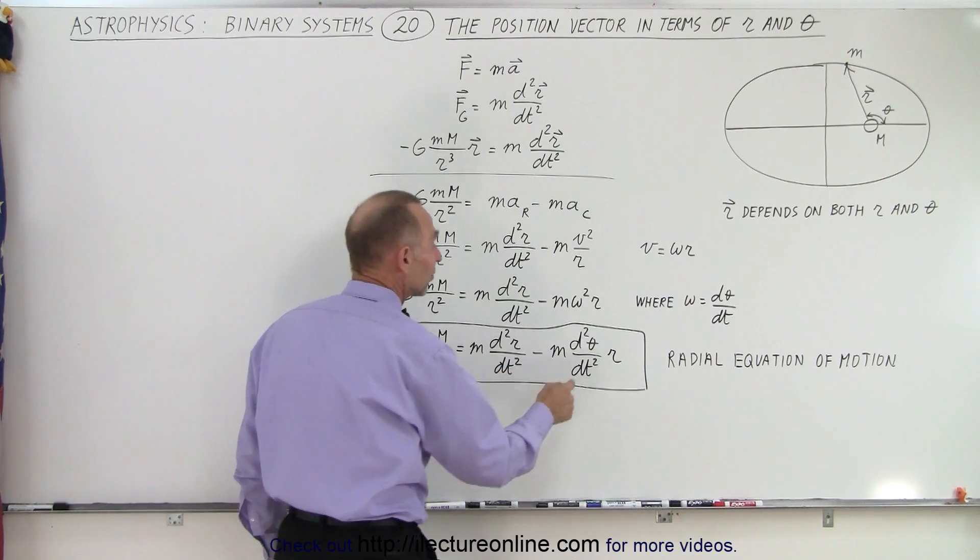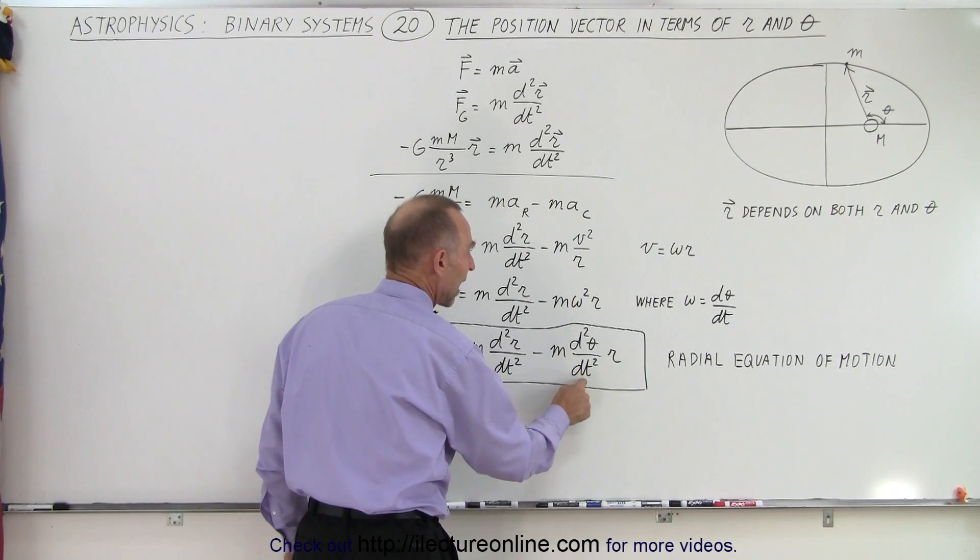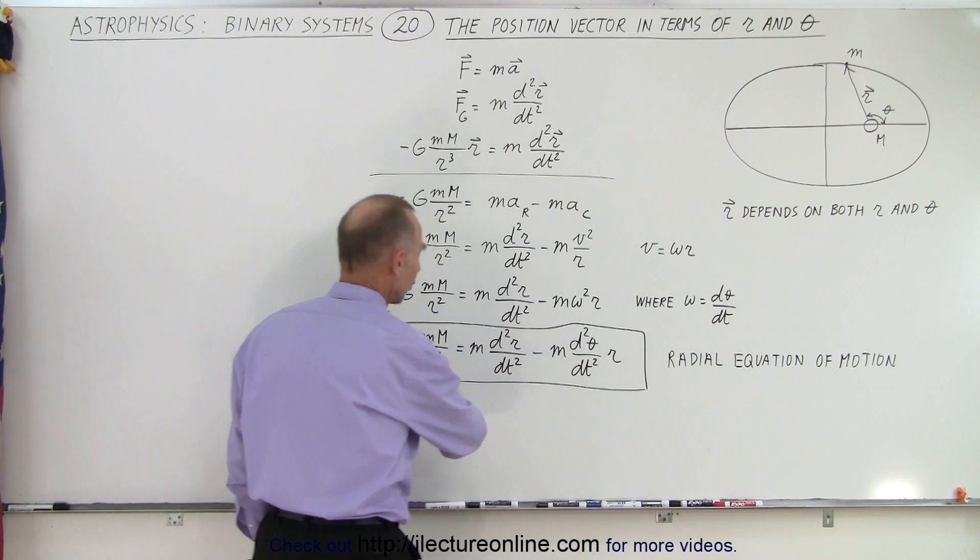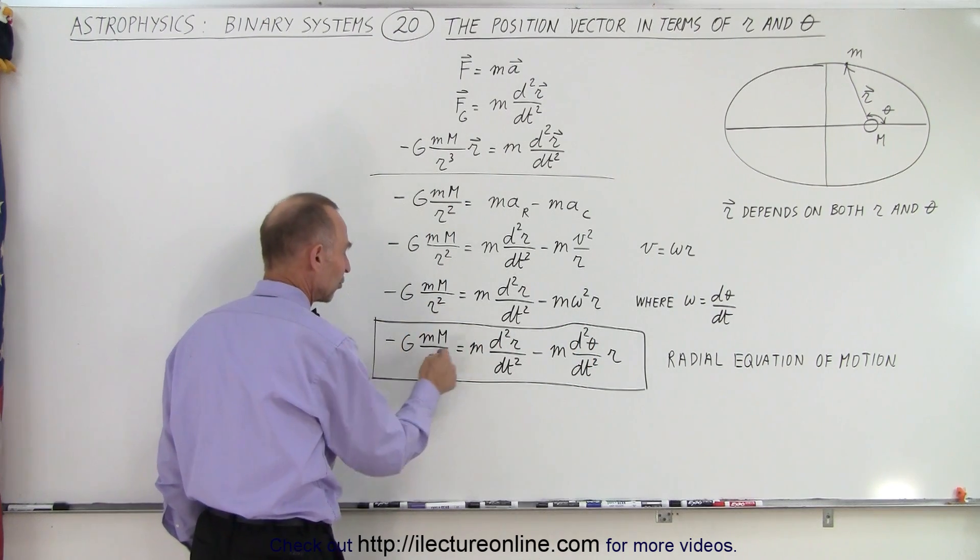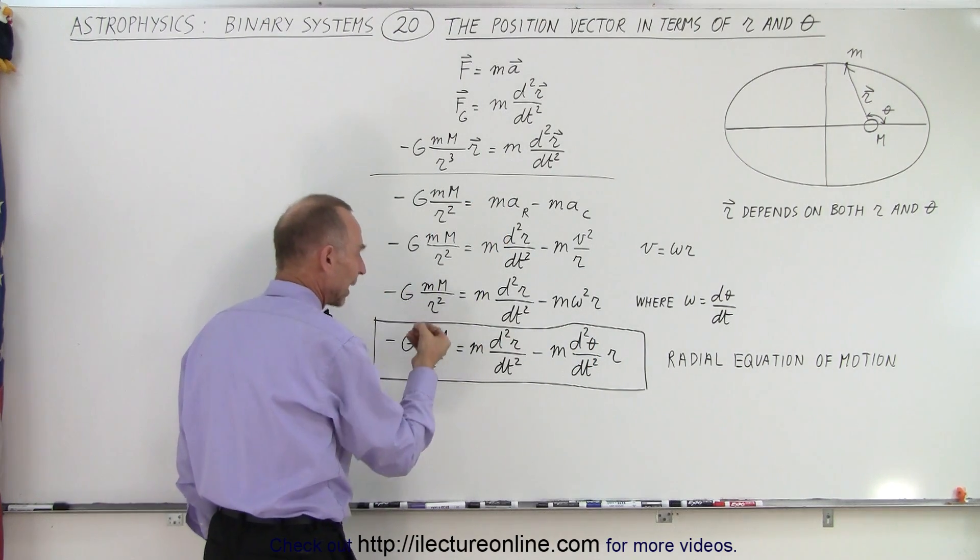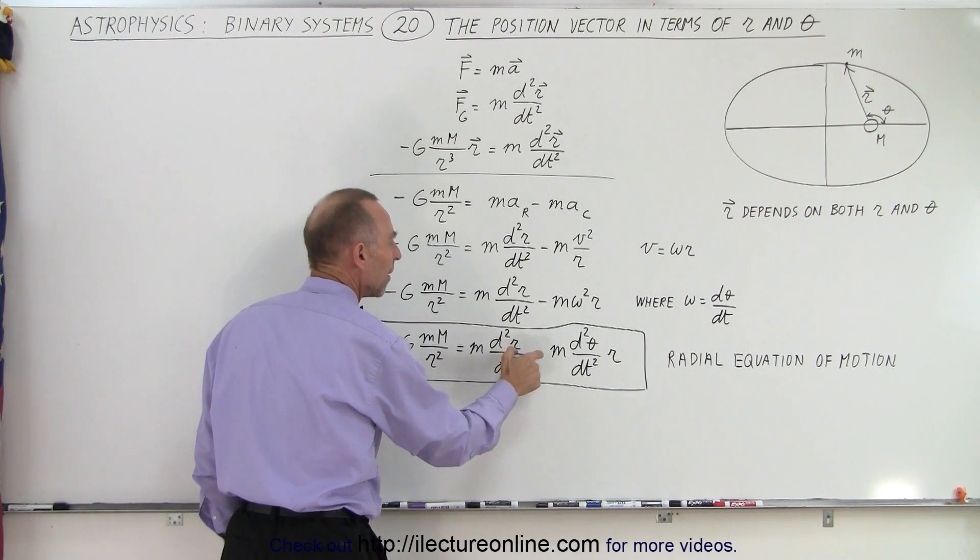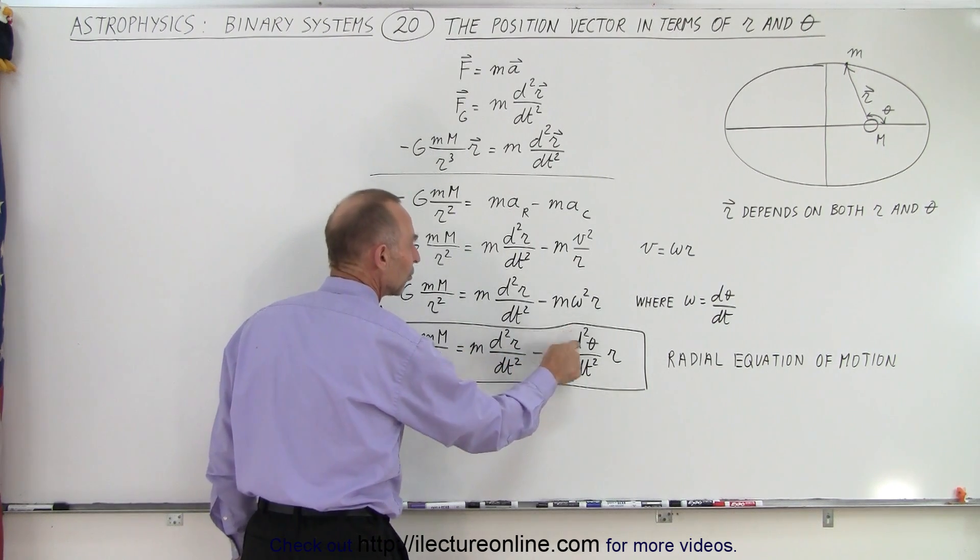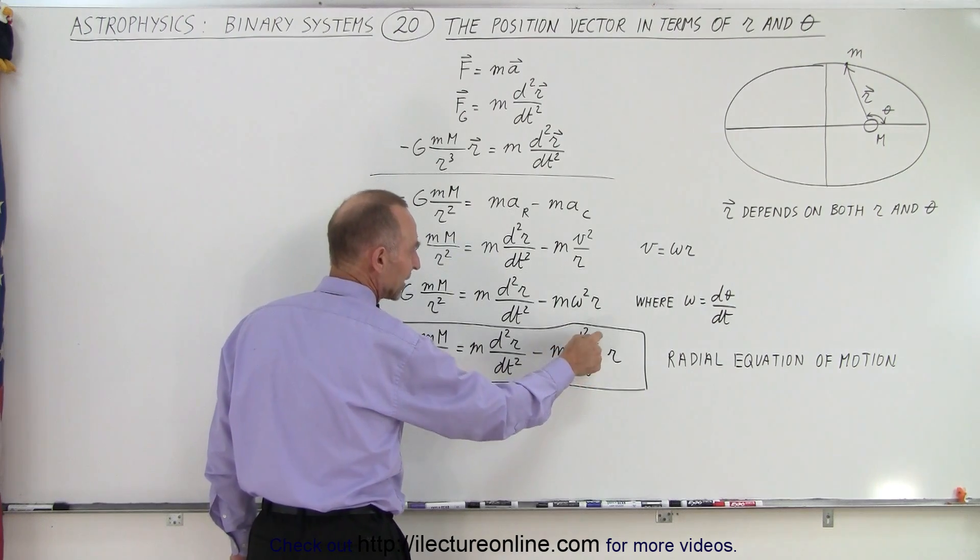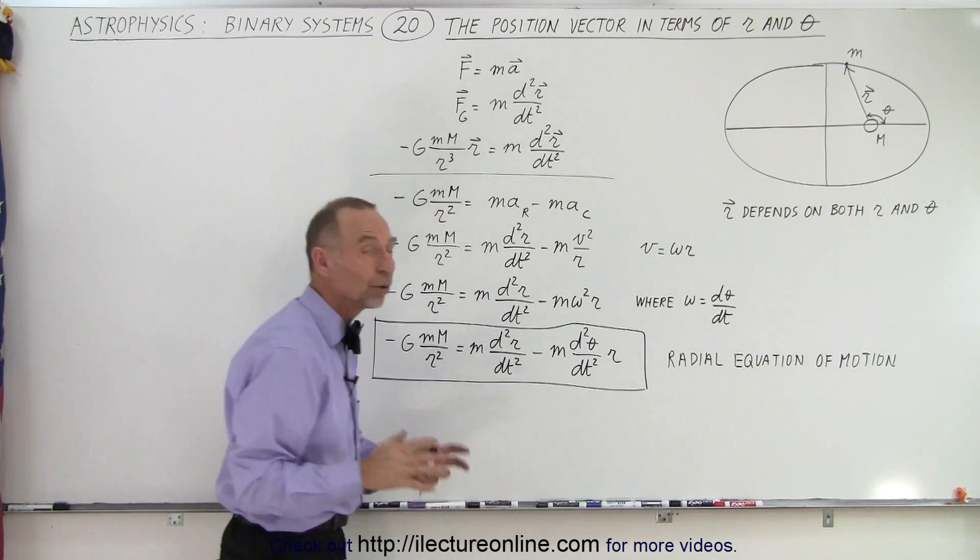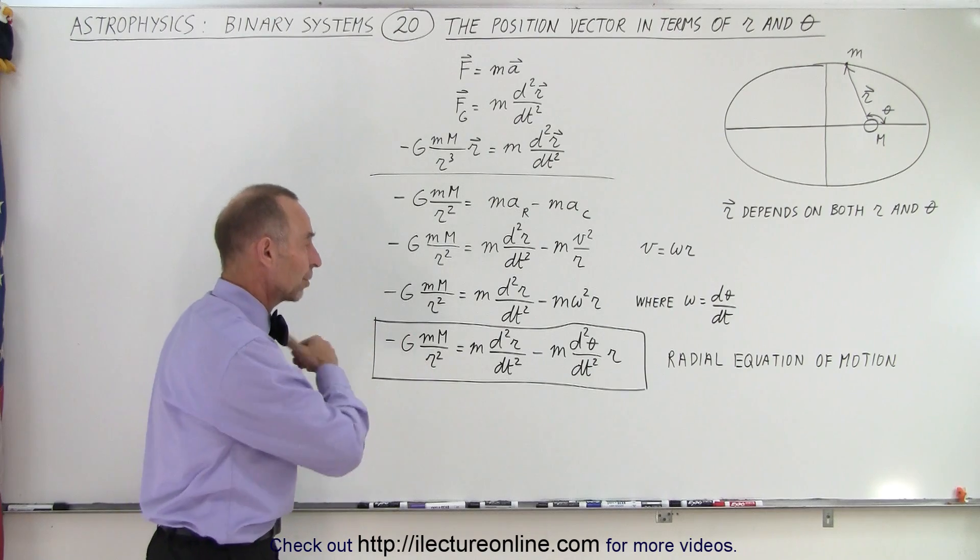And so we can write this as the second derivative with respect to time of theta. The whole equation now becomes: the gravitational force pulling the planet towards the star is equal to m times a in the radial direction minus m times the second derivative with respect to time of the angle times r, which represents the centripetal acceleration.